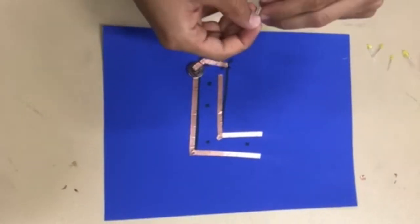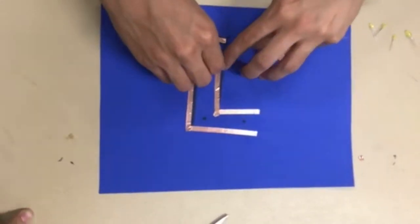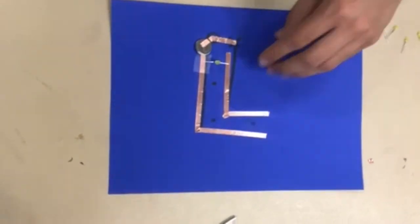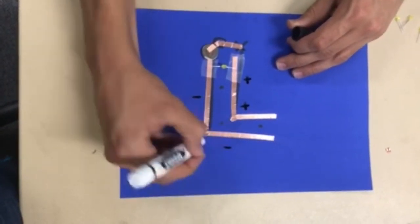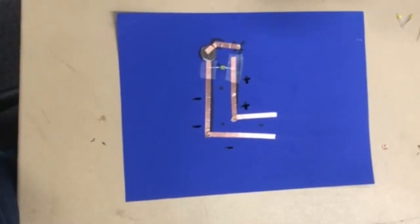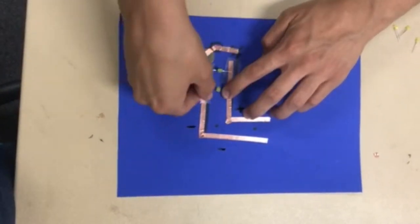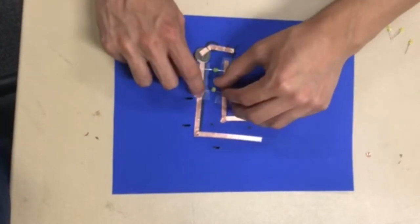You need to make sure to connect the positive and the negative side together. The long end of the stick is the positive, and the short end is negative, so you have to make sure to match up the positive to the negative side of the copper tape.